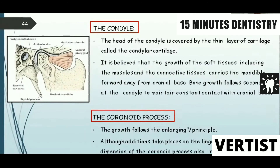The condyle and coronary process are important for understanding functional appliances. The head of the condyle is covered by articular cartilage called the condylar cartilage. It is believed that growth of the soft tissues — muscles and connective tissue — carries the mandible forward away from the cranial base, and bone growth follows secondarily at the condyle to maintain contact with the cranial base. For the coronary process, although addition takes place on the lingual side, the vertical dimension also increases.